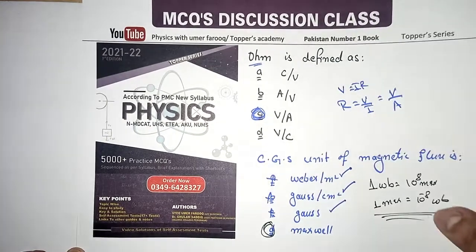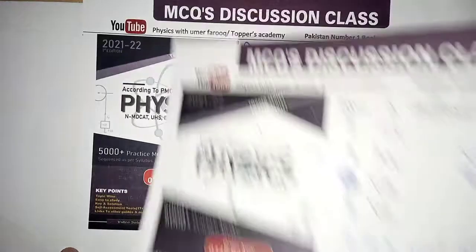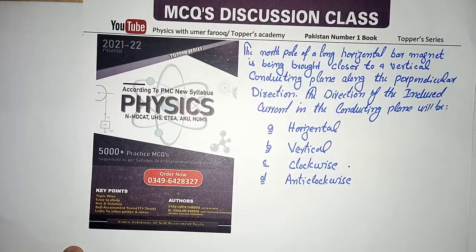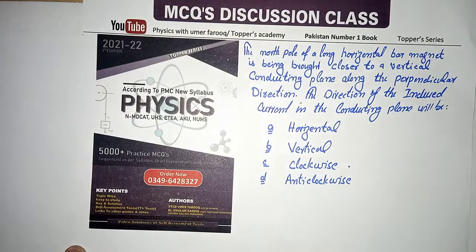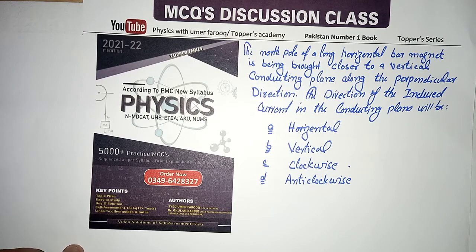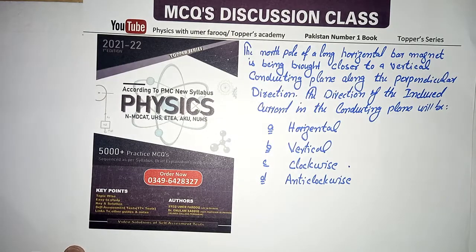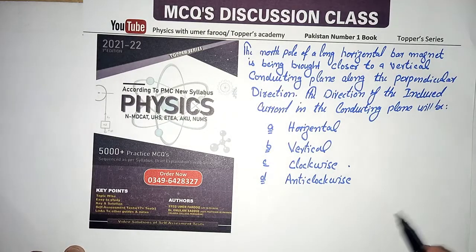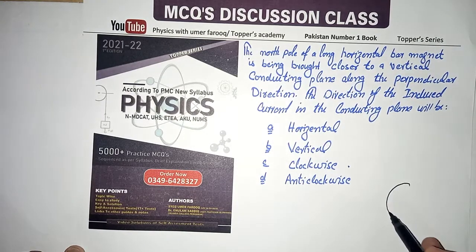Next: the north pole of a long horizontal bar magnet is being brought closer to a vertical conducting plane along a perpendicular direction. The direction of induced current in the conducting plane will be — horizontal, vertical, clockwise, or anti-clockwise? This is a conducting loop.